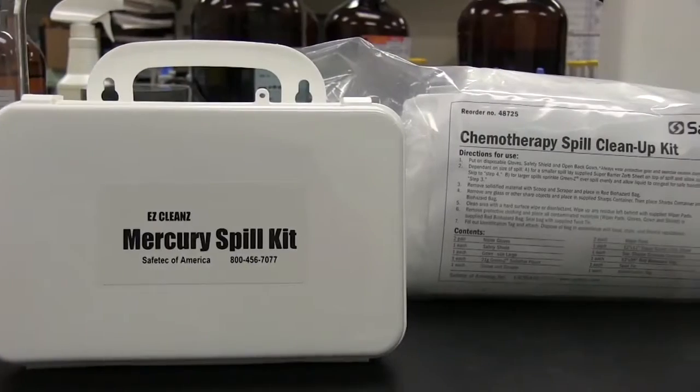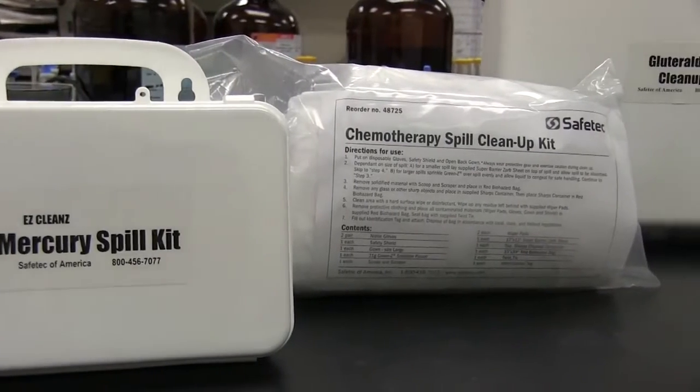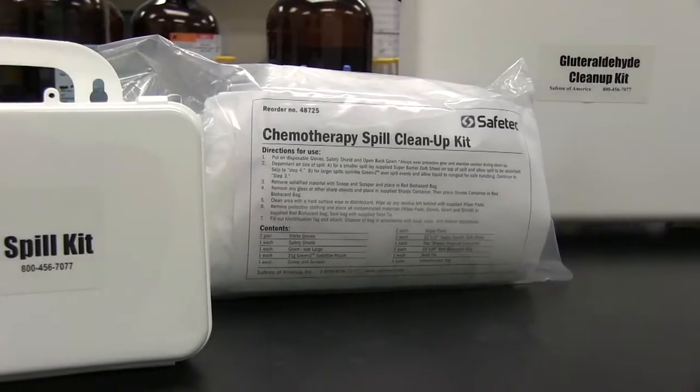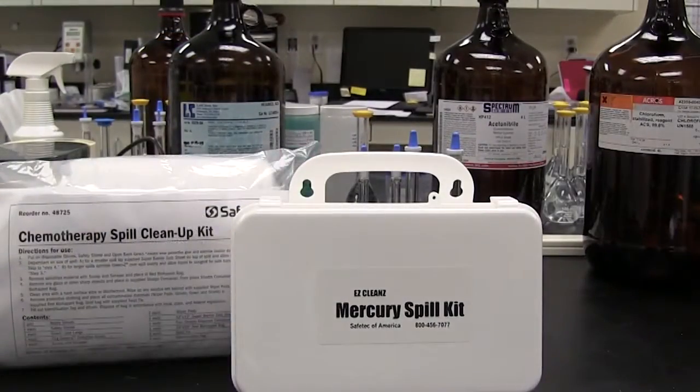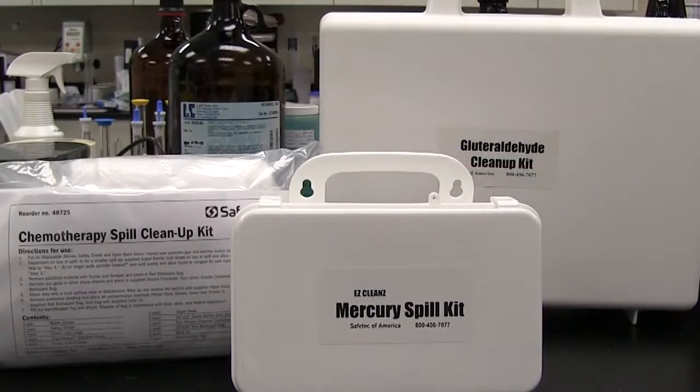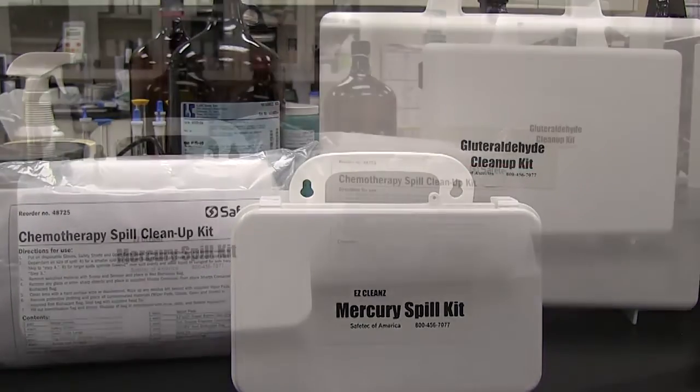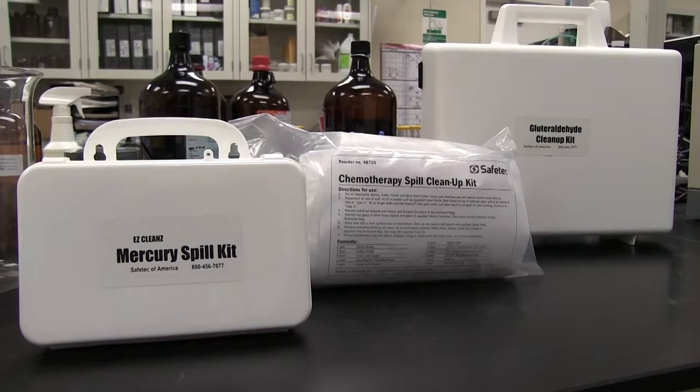To further help in the cleanup of chemical spills, Safetec has developed three types of spill kits: a mercury kit, a chemotherapy kit, and a glutaraldehyde kit. These three kits all contain Green Z, personal protection, and disposal components.